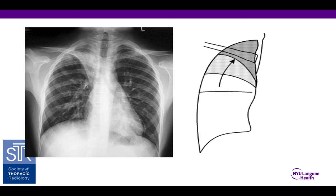Here's another image of right upper lobe atelectasis. You can see this triangular opacity at the top of the right hemithorax. As the right upper lobe collapses, it becomes smaller, more opaque, and it moves up and in. One important thing to recognize is the right minor fissure — as the right upper lobe loses volume and moves up, the right minor fissure moves up with it. There's a clear demarcation between the right upper lobe and the right middle lobe below it. Also note elevation of the diaphragm — if you have enough volume loss, the diaphragm will eventually move up into the chest.